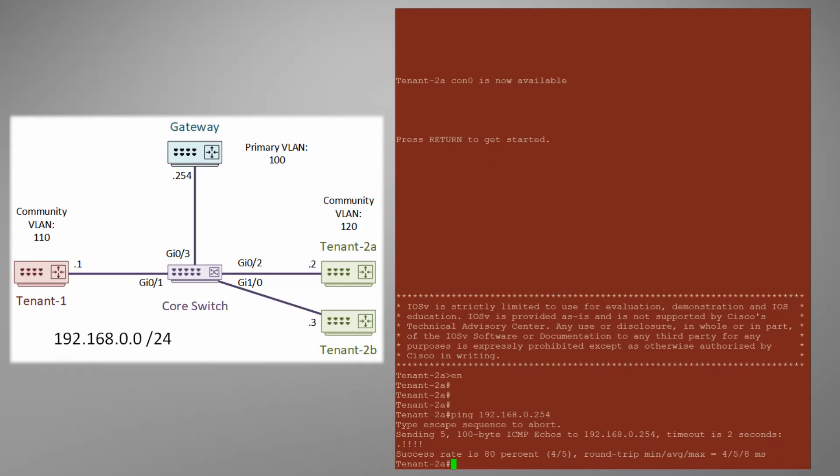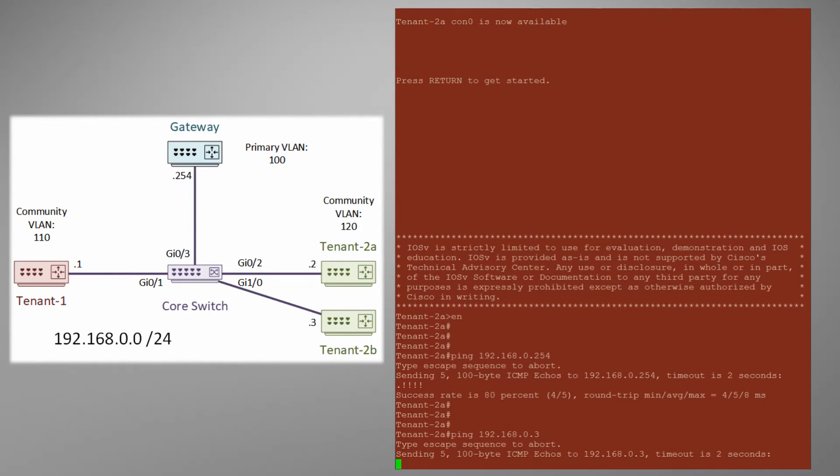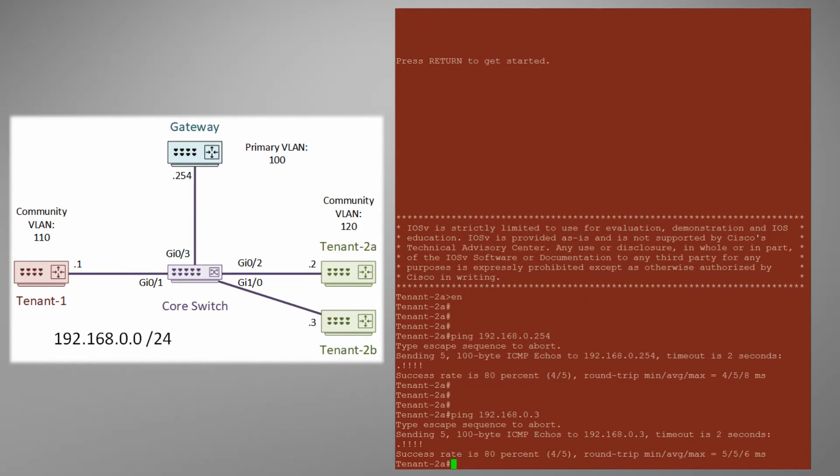If we take a look at tenant 2 we can see that we can also ping the gateway and as this is a community VLAN it can ping the second tenant 2 router. And that's all you have to do to get a PVLAN topology working.